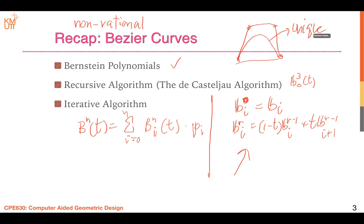That curve is unique according to its control points. If you want to change the curve slightly — for example, move it a bit closer to a control point — it's not easily possible. If you move a control point, the whole curve changes. It doesn't just move a little; the entire curve is changed. This is why we need to use a new model: the rational curve.